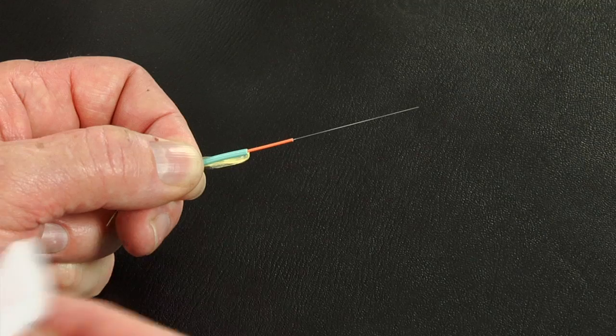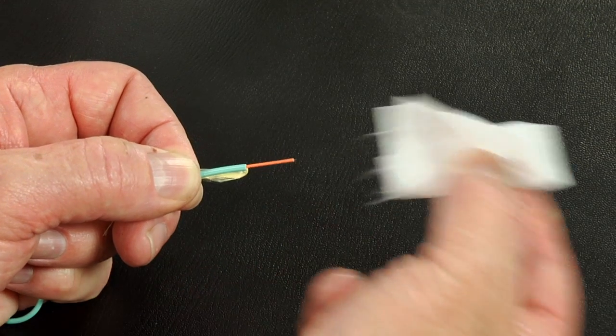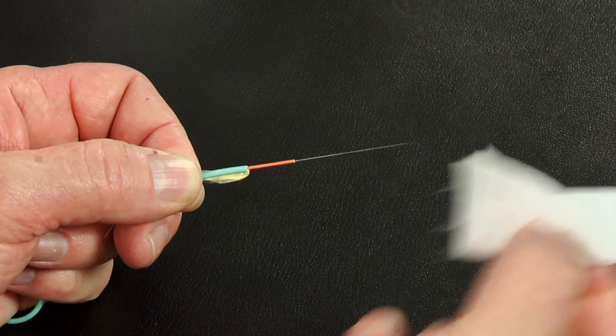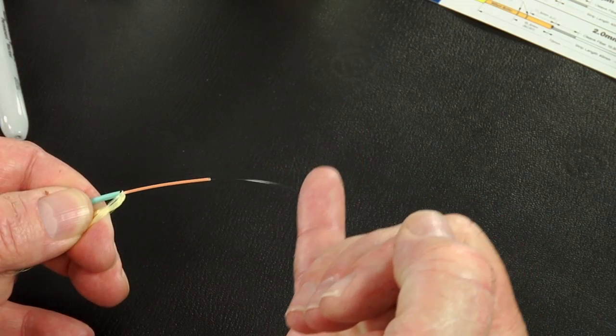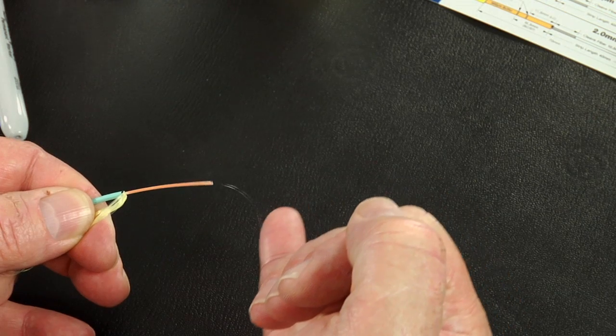Clean the bare fiber using a lint-free wipe moistened with fiber preparation fluid or 95% or better isopropyl alcohol. Flick the fiber to verify integrity.